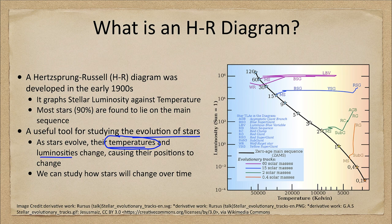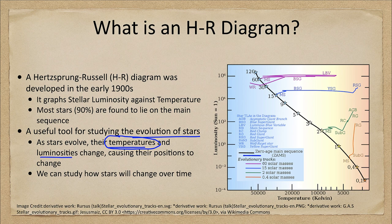Here we see evolutionary tracks for several different stars. We see what we call the zero age main sequence, which is where stars first form — where stars first reach the main sequence. Even a star like our Sun is slowly changing; its temperature and luminosity are changing, though we'll never notice it over our lifetime as it is much too small a change.